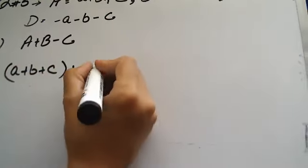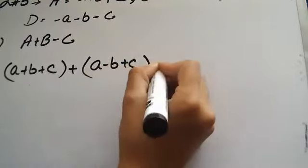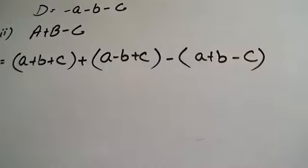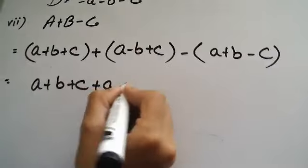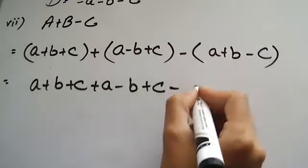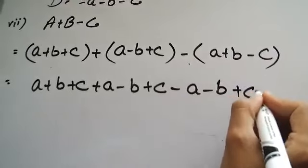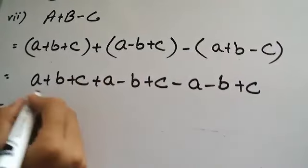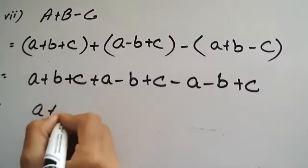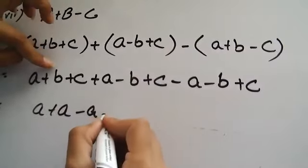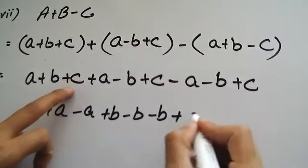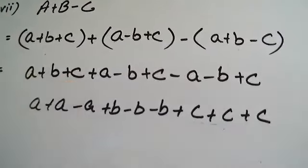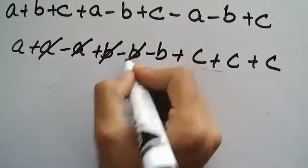We have: A value is a plus b plus c; B value is a minus b plus c; C value is a plus b minus c. So substituting all: we get a plus b plus c, plus a minus b plus c, minus a minus b, plus minus minus which gives plus c. Plus and minus values cancel out here.